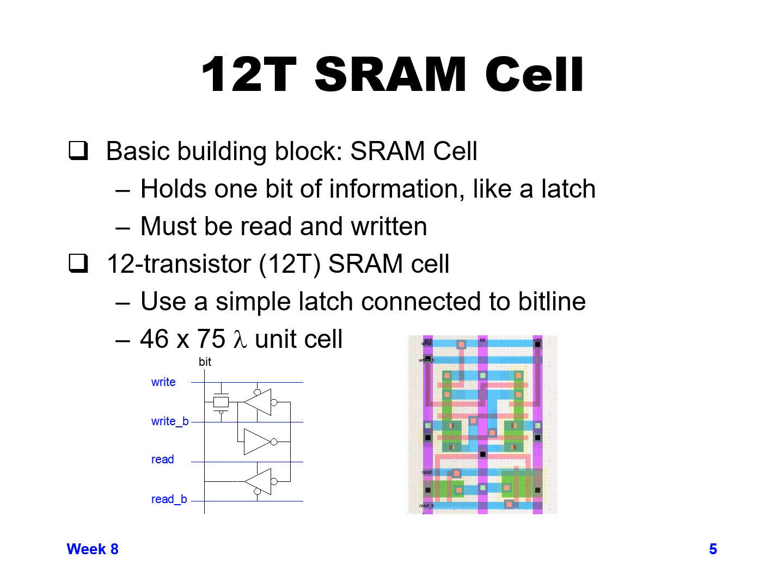Before discussing how the overall array is laid out, we want to know what the basic building block of the array is — the individual bits we're storing values in. This slide shows one possible arrangement for an SRAM cell called a 12T, meaning it has 12 transistors. It holds one bit of information and is very much like a latch — we can read it, write it, and it holds its information, similar to our latch structure. It uses a pass gate structure.